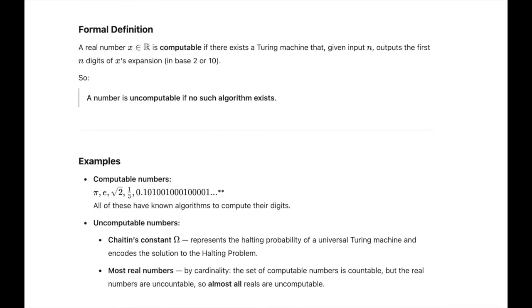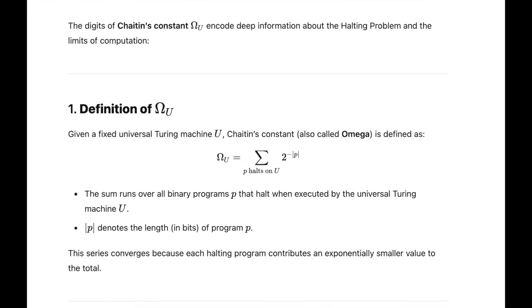Uncomputable numbers expressed in the language of set theory come from the axiom of infinity and the axiom of power sets. They have nothing to do with the axiom of choice.